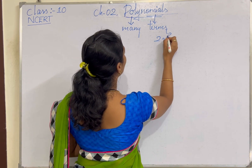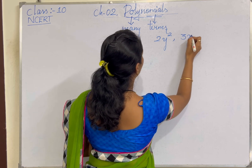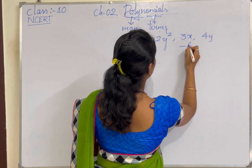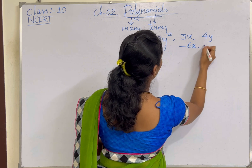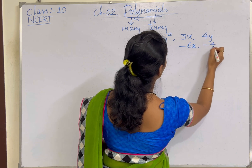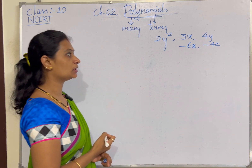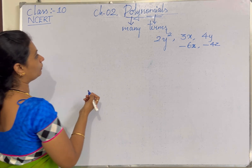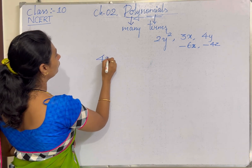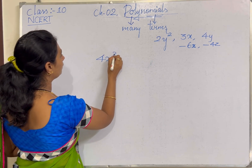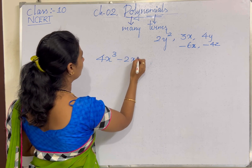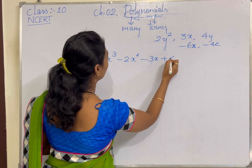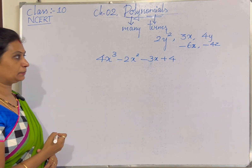The terms can be 2y², 3x, 4y, -6x, -4z, etc. These are the terms. When these terms are connected with either plus or minus, for example 4x³ - 2x² - 3x + 4, this is a polynomial expression.